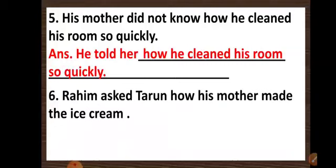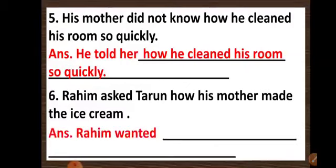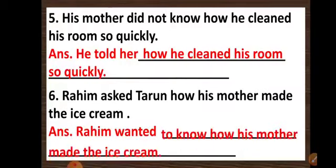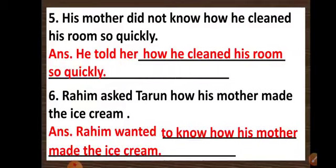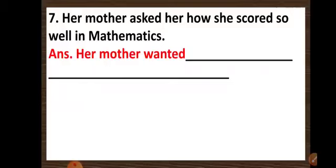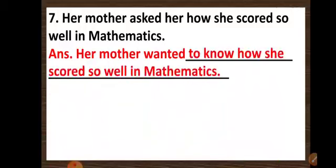Sixth question: Rahim asked Tarun how his mother made the ice cream. And the answer — Rahim wanted to know how his mother made the ice cream. Are you noting down the answers, children? Rahim wanted to know how his mother made the ice cream. Seventh question: her mother wanted to know how she scored so well in mathematics.